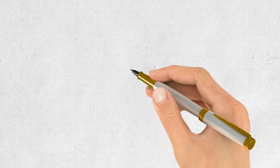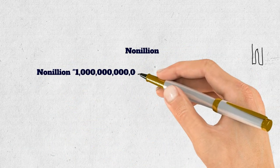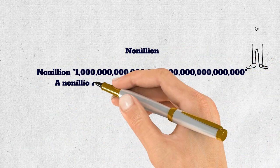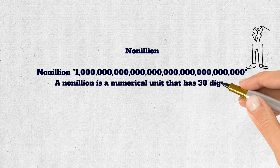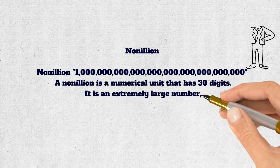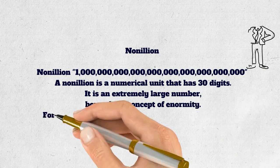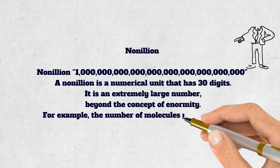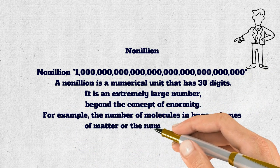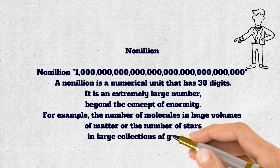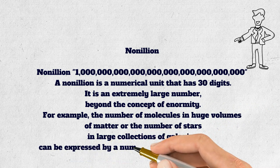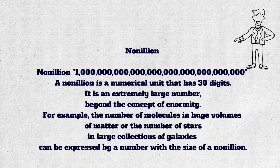Nonillion. A nonillion is a numerical unit that has 30 digits. It is an extremely large number, beyond the concept of enormity. For example, the number of molecules in huge volumes of matter or the number of stars in large collections of galaxies can be expressed by a number with the size of a nonillion.